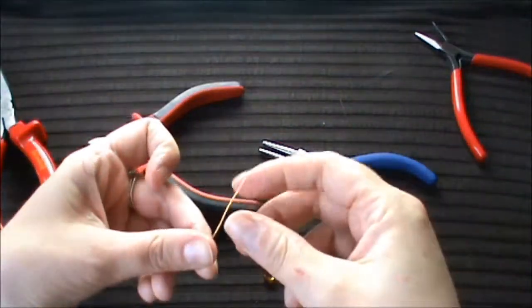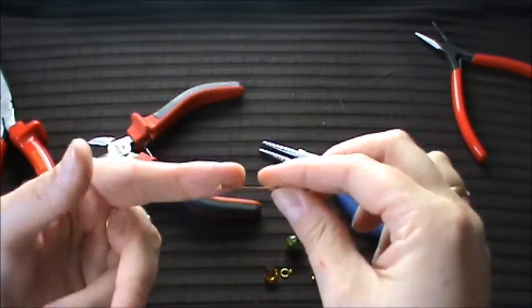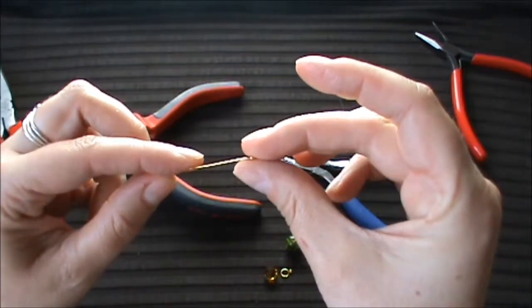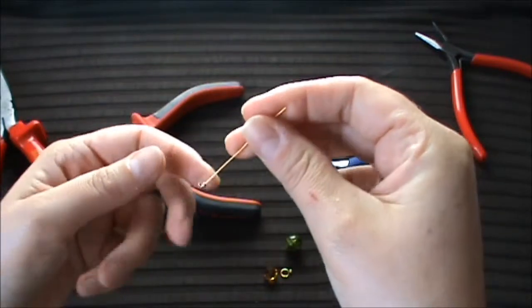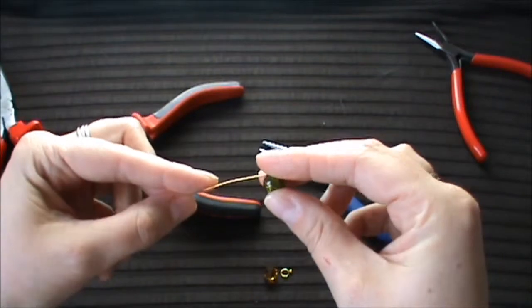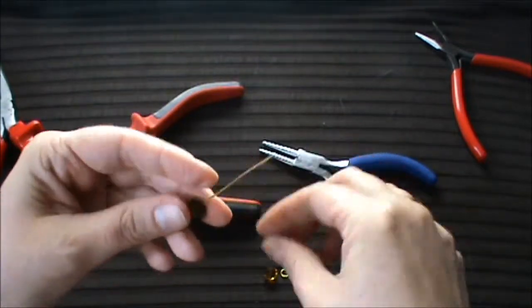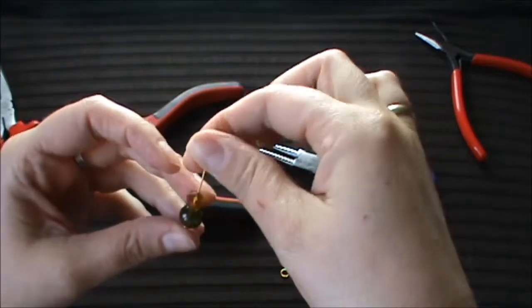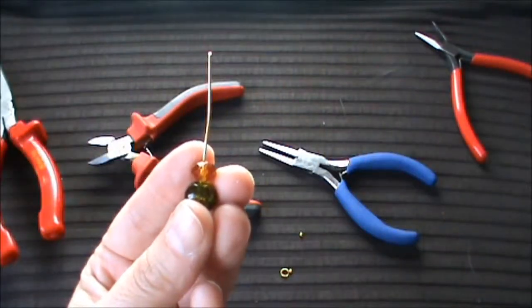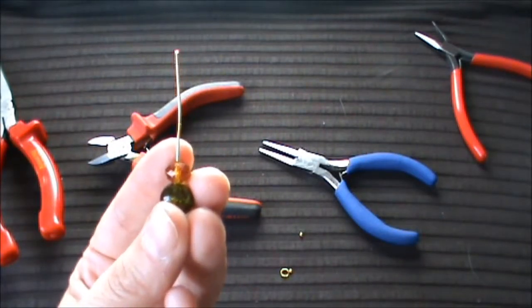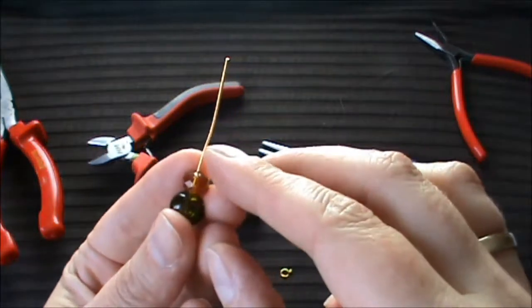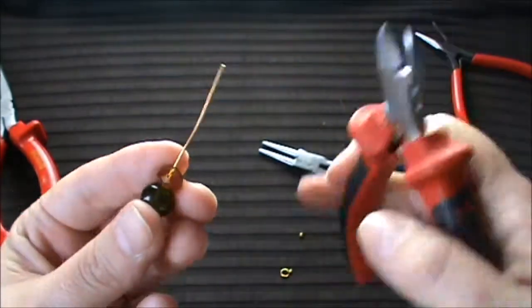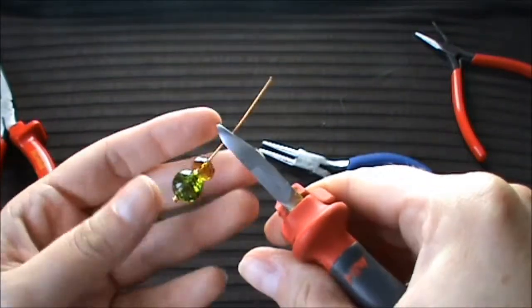Now it's time for the charm. For the charm you take your head pin and a crimp bead and thread it onto the head pin, a bigger bead and a smaller bead. And now you can make a loop. You have to cut off the wire with a cutting plier, leaving a length about 1cm after the last bead.